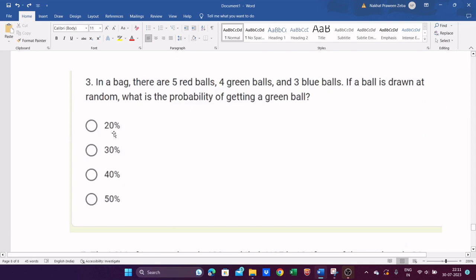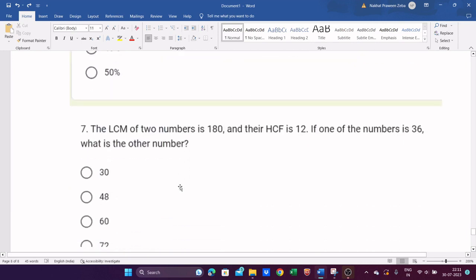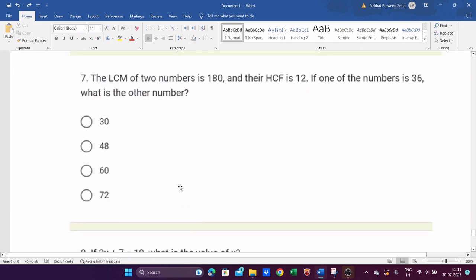Next one is: the LCM of two numbers is 180 and their HCF is 12. If one of the number is 36, what is the other number? There is one formula right, LCM times HCF equals product of two numbers.